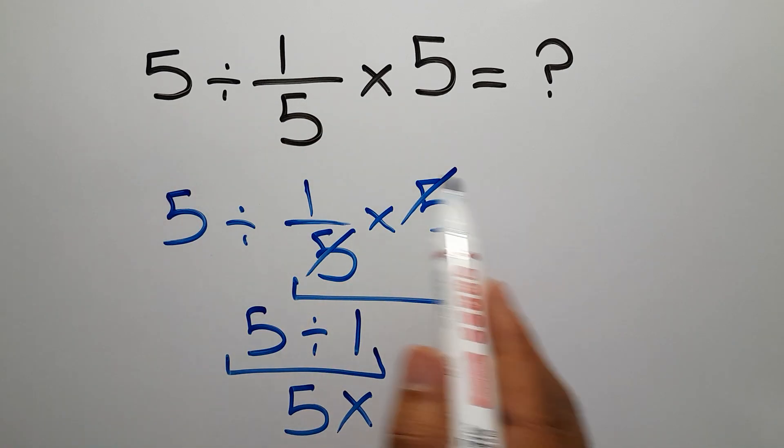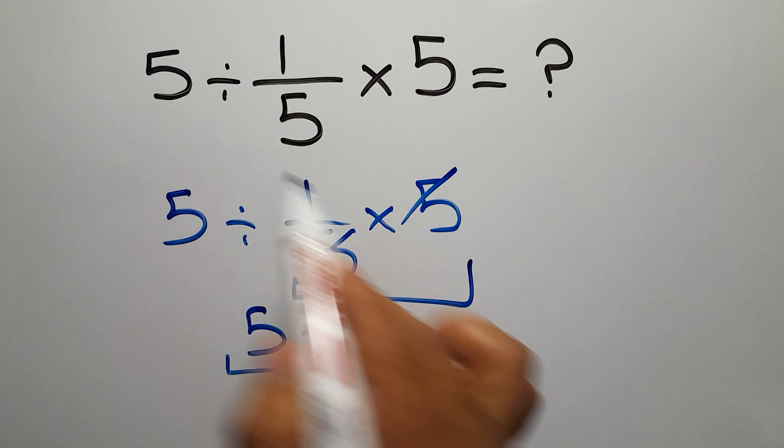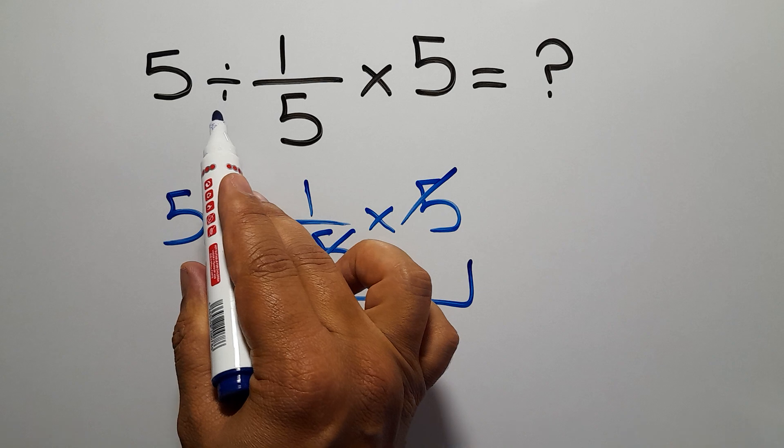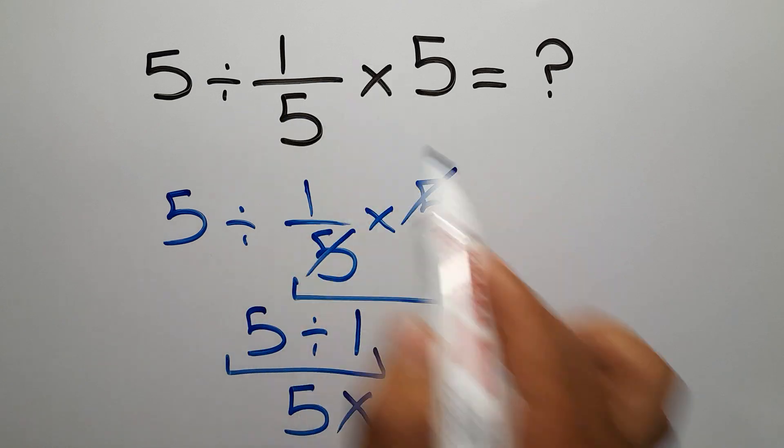So first we have to do this division, not this multiplication. First this division, then this multiplication.